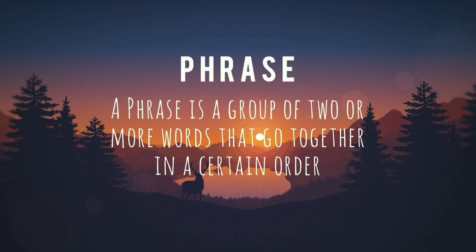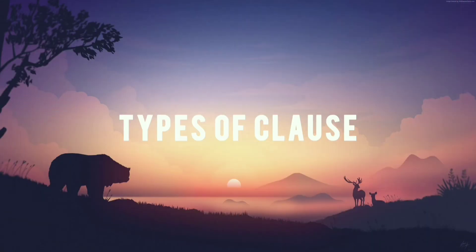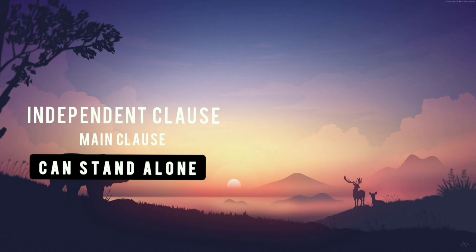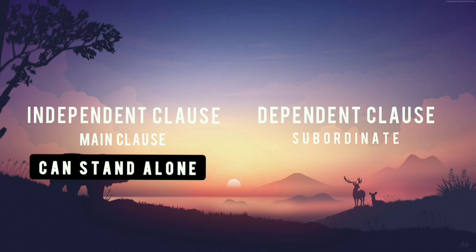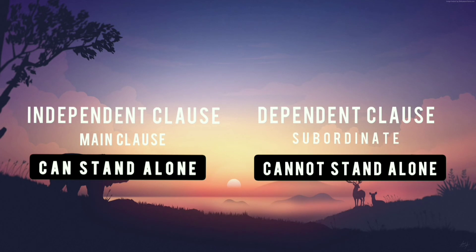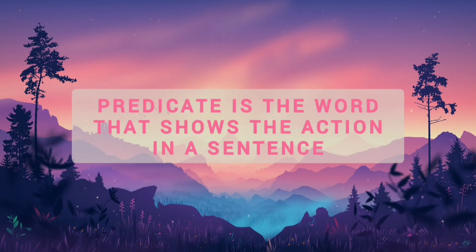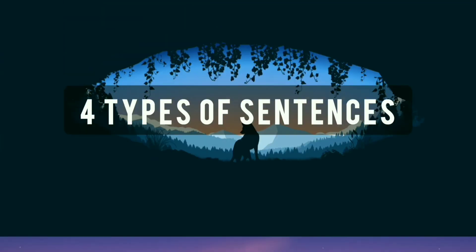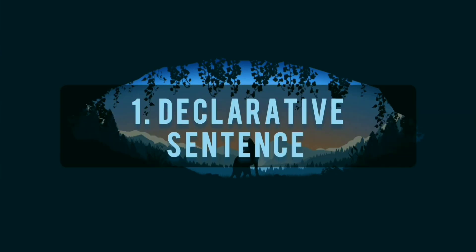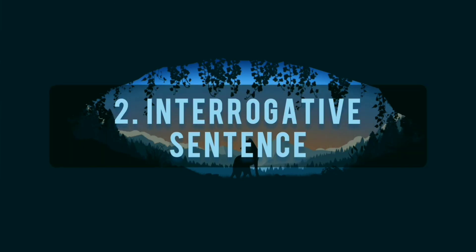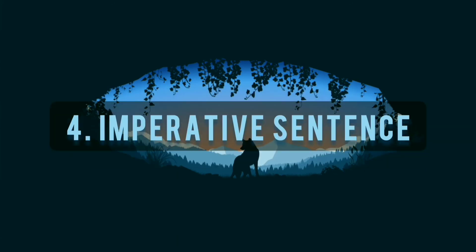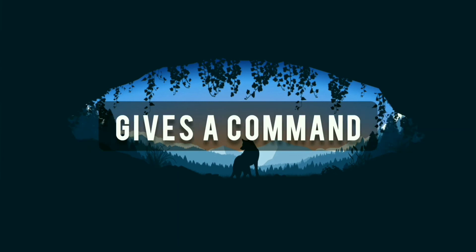A phrase is a group of two or more words that go together in a certain order. There are two types of clauses. The first is an independent clause, or main clause — it is complete and can stand alone as a sentence. The second is a dependent clause, or subordinate clause — it contains a subject and verb but cannot stand alone as a sentence. A predicate is the word or words that show the action in a sentence; it is everything except the subject. There are four types of sentences: a declarative sentence tells something; an interrogative sentence asks a question; an exclamatory sentence shows strong feelings; and an imperative sentence gives a command.